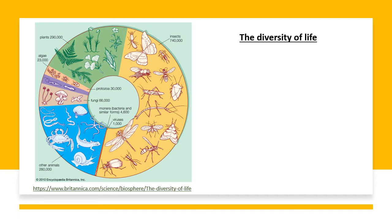Planet Earth is inhabited by millions of different species. According to an estimate, there are approximately 300,000 species of beetles alone. We have 17,000 species of butterflies, insects, approximately 300,000 species of plants, algae, other mammals, viruses, bacteria, fungi, and protozoa. So there are a large number of different species living on this planet, and although they are all different from each other, yet there is some commonality among these species.